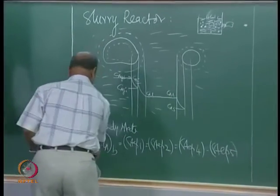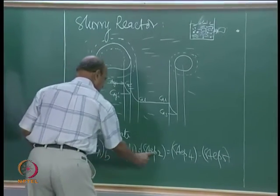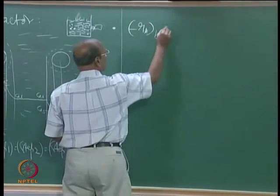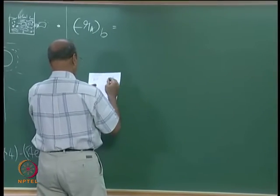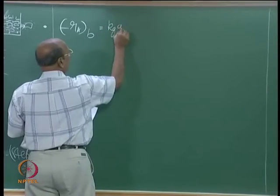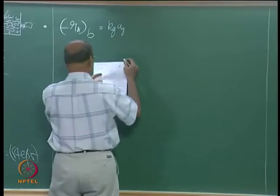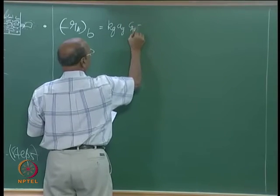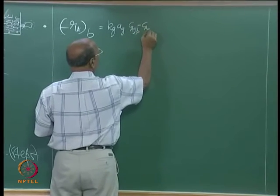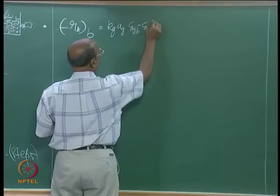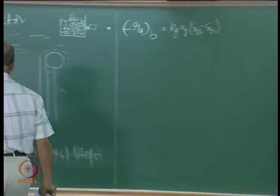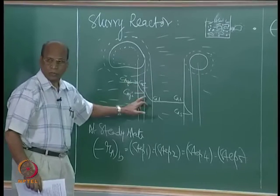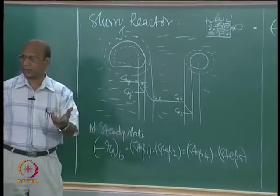So I am writing now for step 1, step 2, step 3, all equal to. Minus R_A bulk will be K_g times A_g - I will let you know what A_g is - times (C_AgB minus C_AgI). This diagram will be very, very good for you because you can identify what the concentration gradients are.